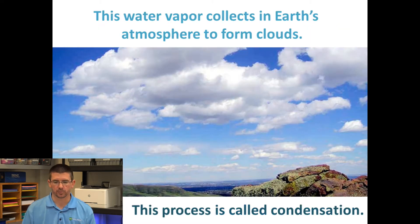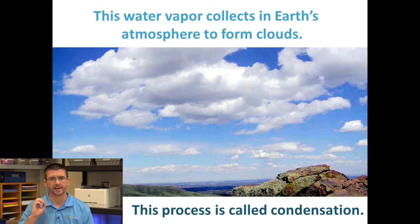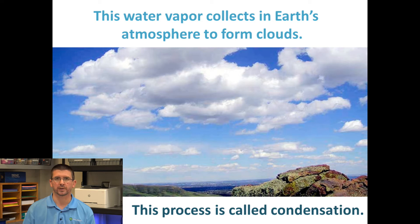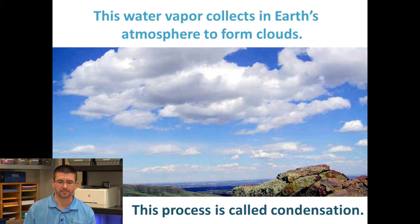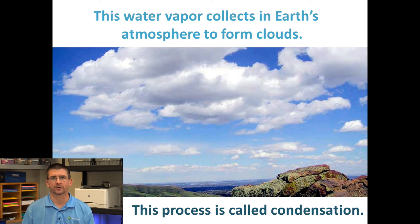Water vapor collects in Earth's atmosphere and is made up of tiny little droplets of water that clump together to make clouds. We call this process condensation — the grouping together of bits of water vapor to make tiny water droplets. It's the same process as when you take a hot shower and the mirror is fogged up, or you get in your car on a cool morning and the windows fog up. That's condensation, because warm water vapor rises into the air, cools off, and changes from a gas back to a liquid.